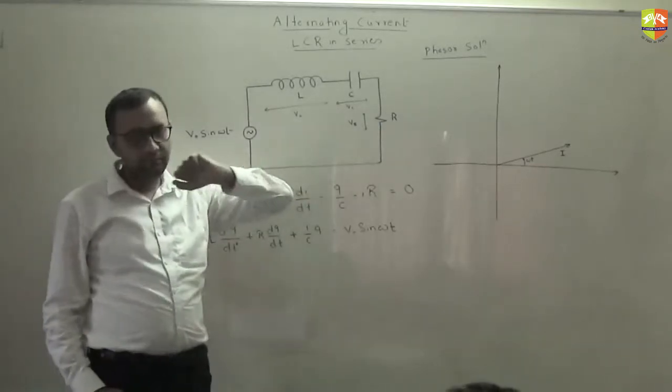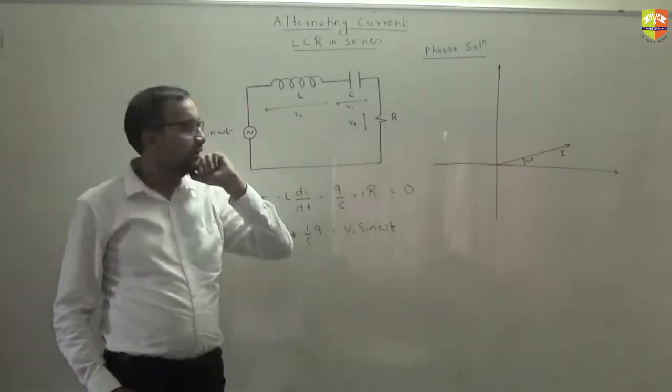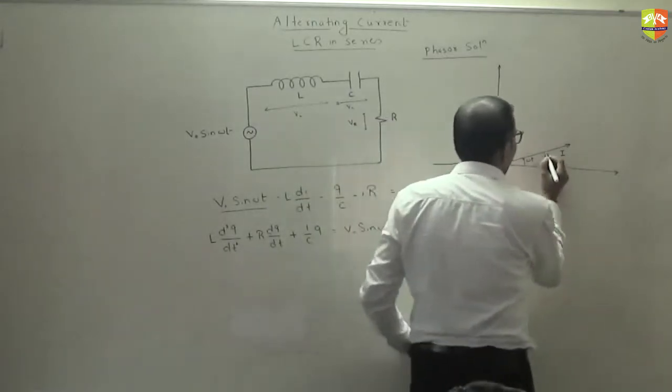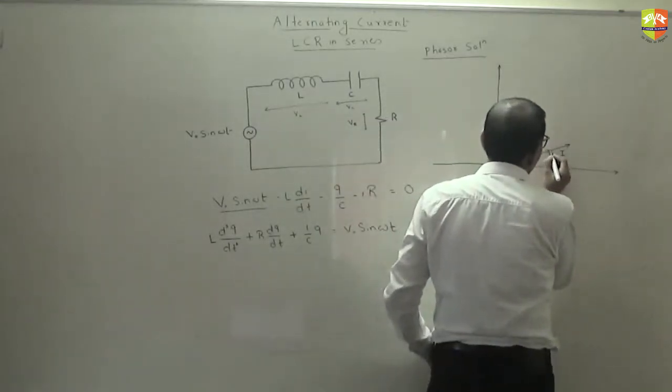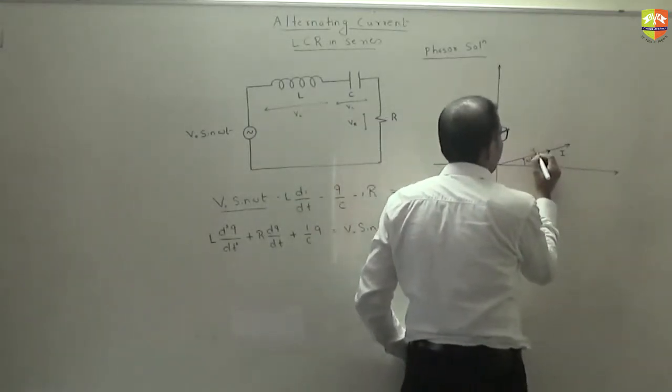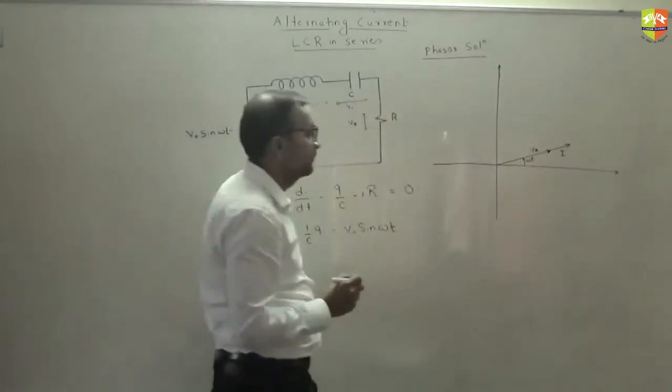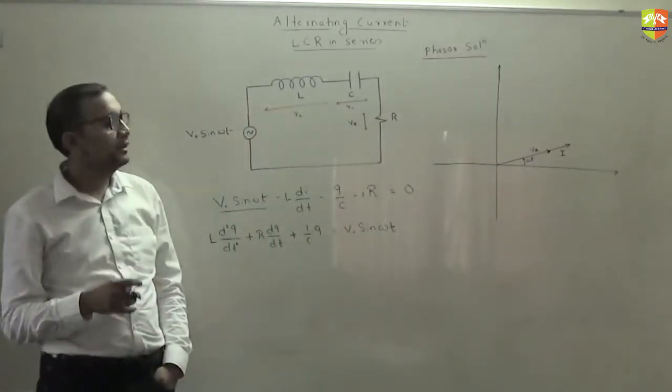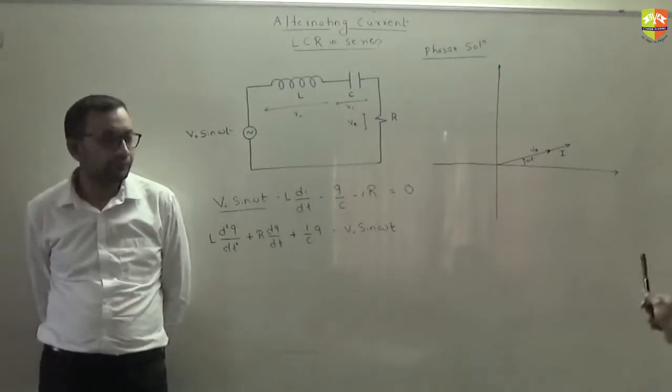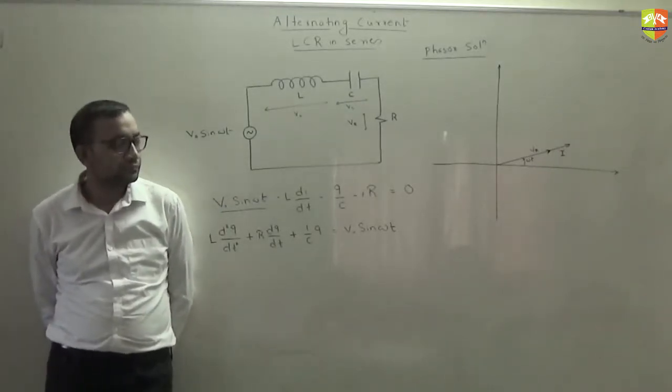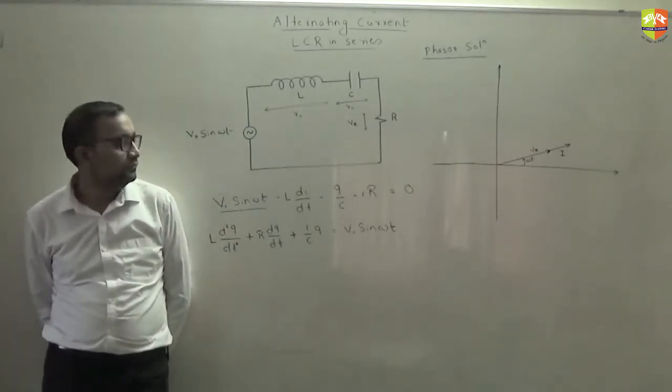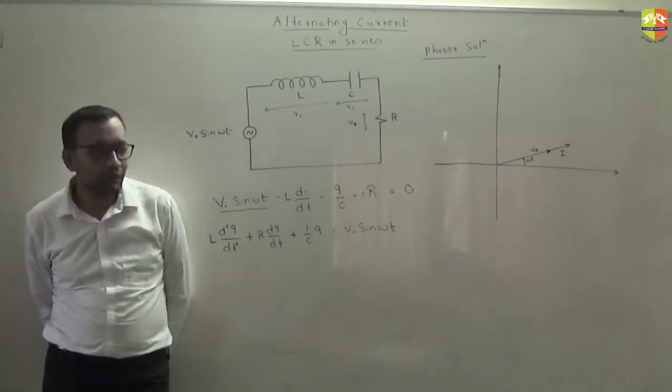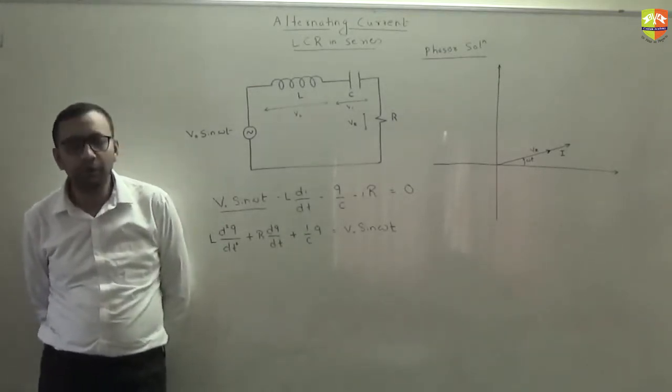First, where will be VR? VR will be along the current. There is no phase difference, this is VR. Now represent where VL and VC will be. Can you just take I along the axis because it is arbitrary? No, but omega t will not feature them. I want to show omega t.